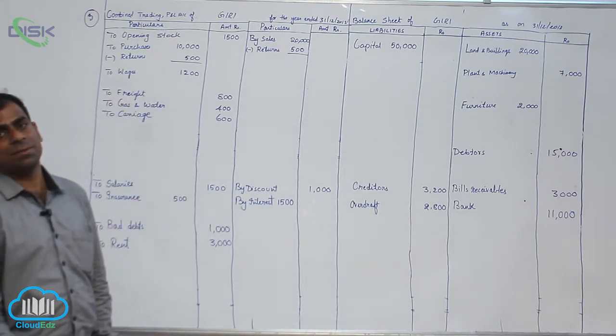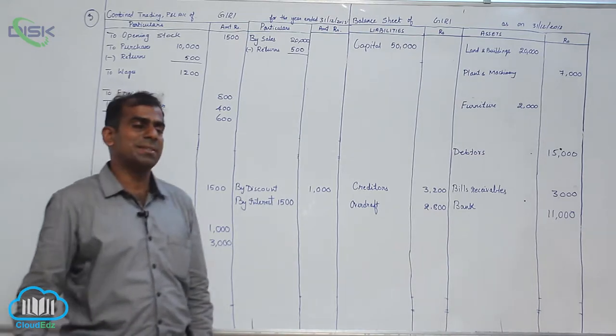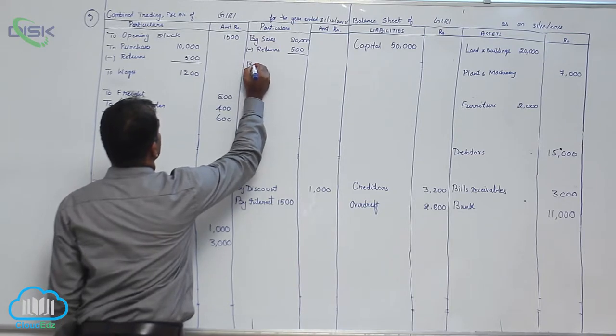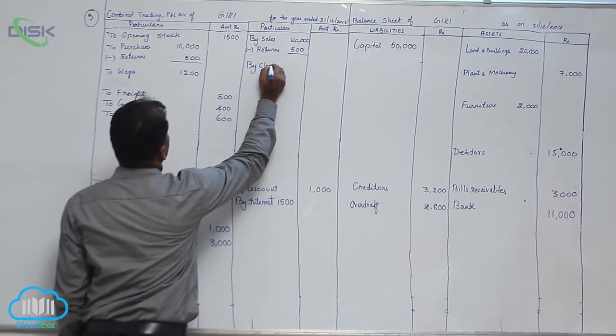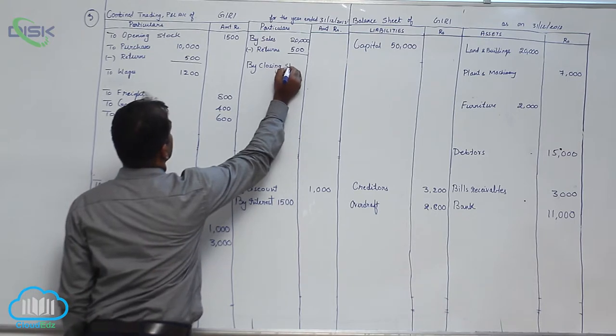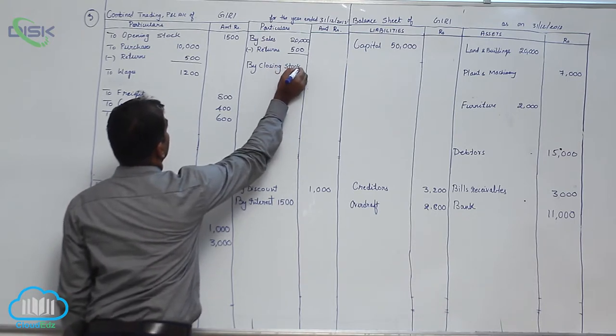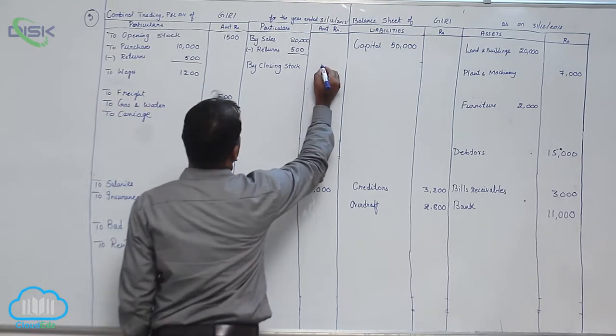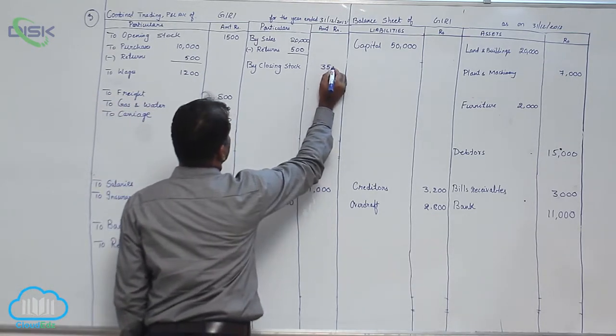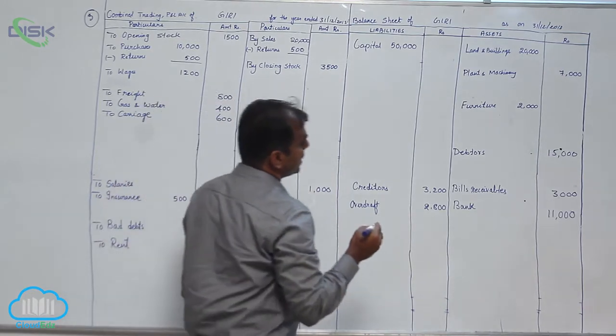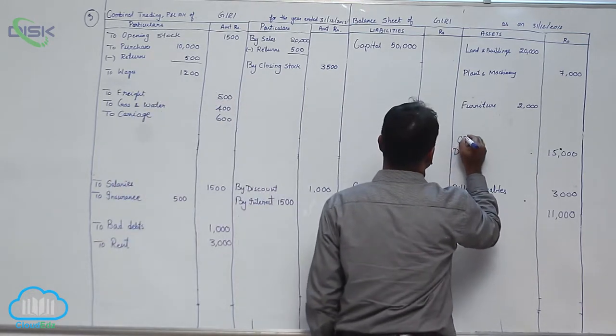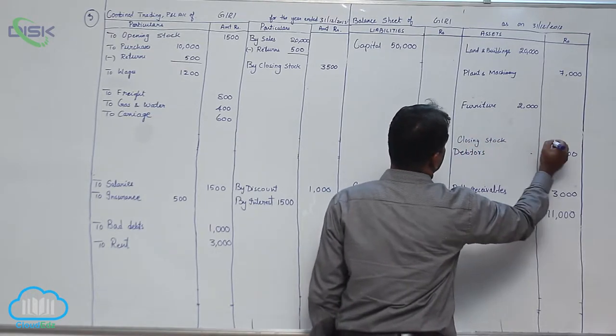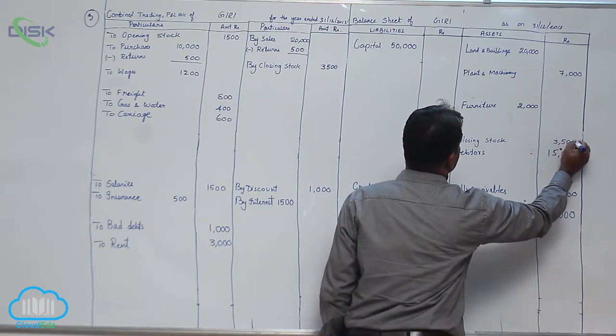The first item is closing stock. If you refer to the table, it states we should take it in trading account credit side. I am writing closing stock in trading account on credit side, the amount being 3500. You also know it is an asset, so we will enter it in the balance sheet assets - closing stock 3500.